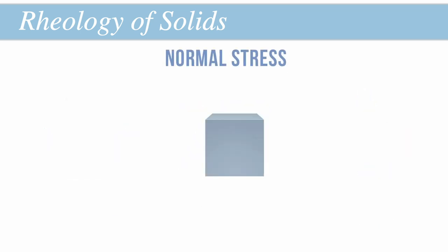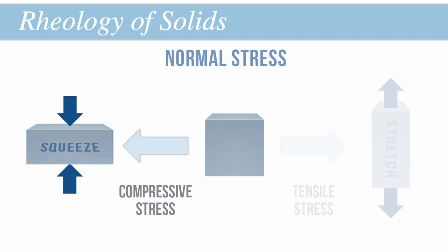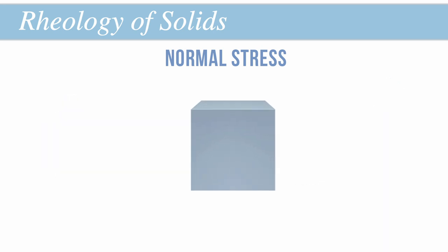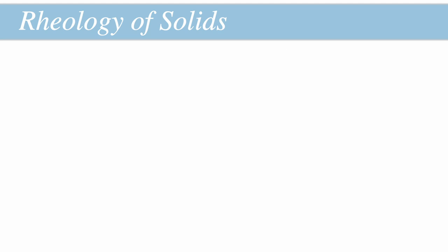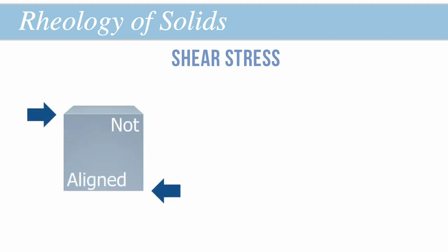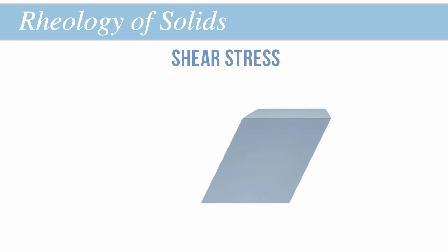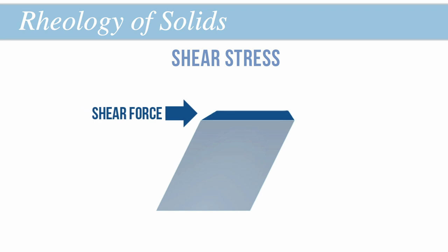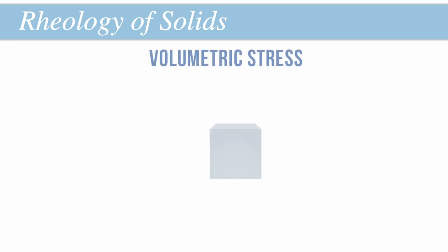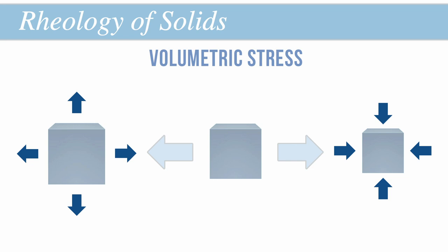Normal stress pertains to an object that is either being compressed or stretched by two forces pushing or pulling on it from opposite ends simultaneously — occurring when the forces acting upon the object are aligned directly opposite each other in the same plane. Shear stress occurs when two forces are not aligned, causing molecules to slide past each other, resulting in a shearing deformity. Unlike a normal force, a shear force is parallel to the reference plane, and the resultant shear strain causes the object to change shape due to a change in its angles without a change in its dimensions. Volumetric stress can be thought of as the three-dimensional version of normal stress, wherein the object is either stretched or squeezed in all directions equally.